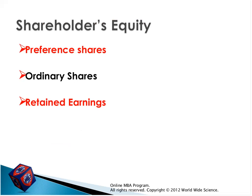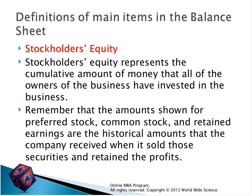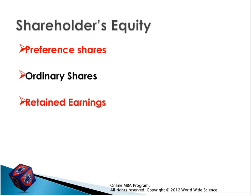Now we are moving on to shareholders' equity. What is the company's equity? It represents the cumulative amount of money all the owners of the business have invested in the company. All investors have invested money — this is accumulated and called shareholders' equity. When you see a balance sheet or income statement, items like preferred stock, common stock, or retained earnings are given in the historical amounts. We have preferred shares, ordinary shares, and retained earnings.